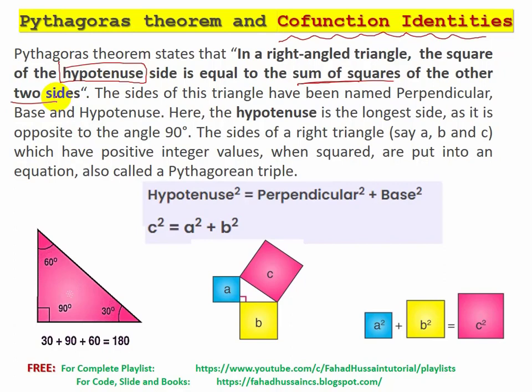As we know, when we talk about a right-angled triangle, one angle is 90 degrees. The two other angles sum to 90 degrees as well. Based on this, 90 plus 90 equals 180 degrees, and the right-angle triangle's angles together form 180 degrees.